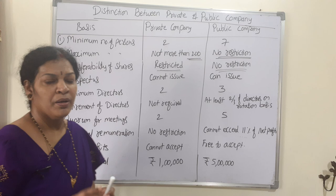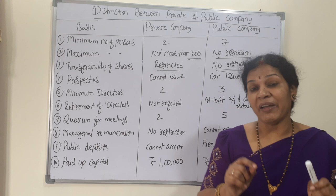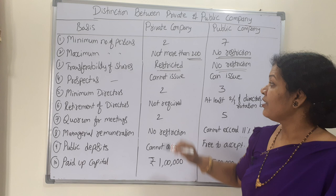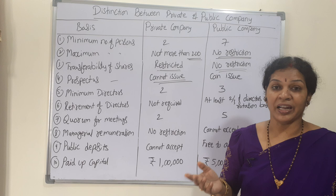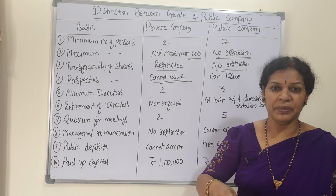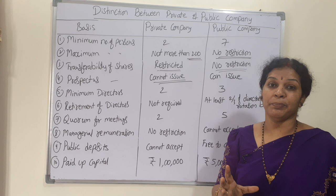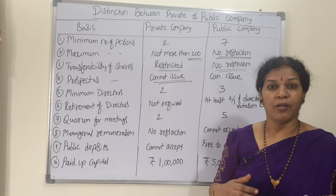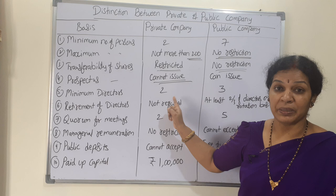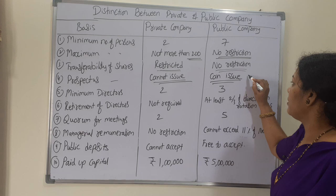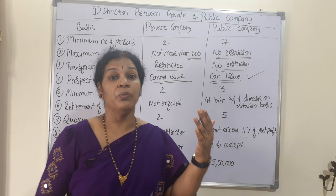Next is the prospectus. A private company cannot issue shares to the public, so there is no question of issuing a prospectus. A prospectus contains full details of the company — how many shares they want to issue, balance sheets of the last five years, and more. A public company can issue a prospectus because it has the right to issue shares and invite shareholders to buy them.